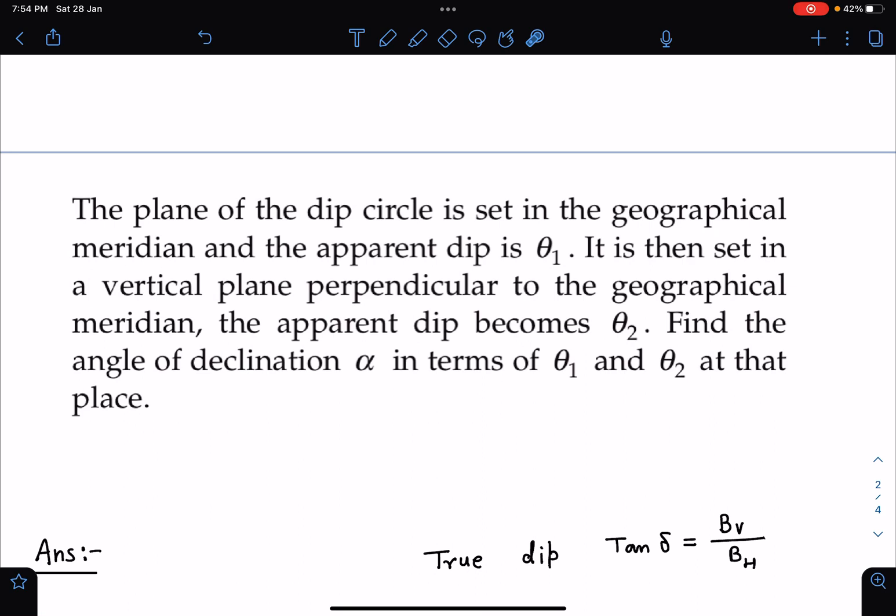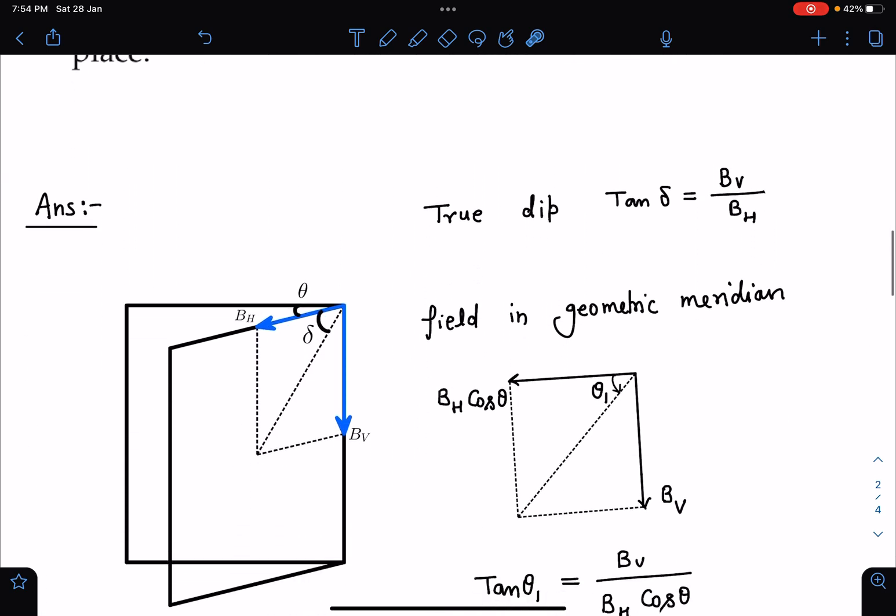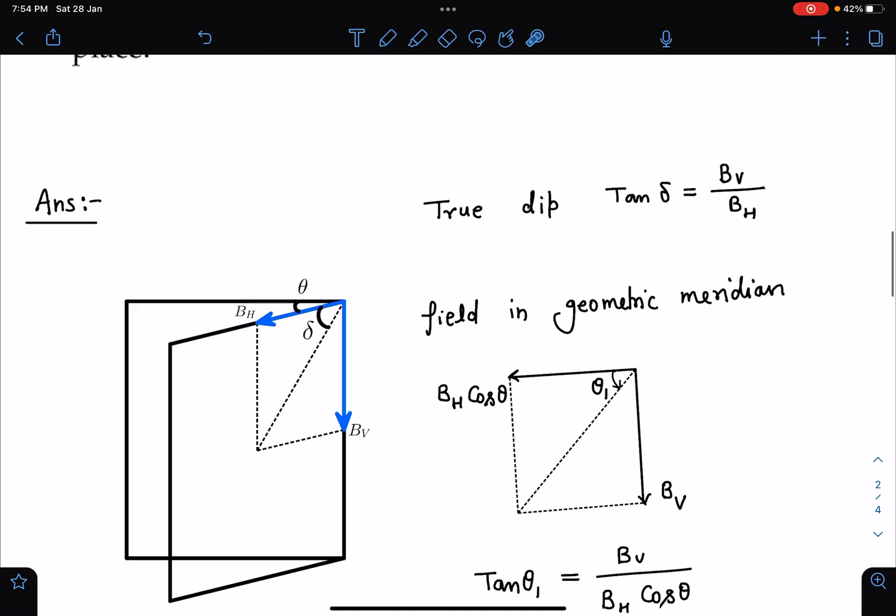The correct value of dip angle will be measured in the magnetic meridian. So here in this diagram you can see this is the magnetic meridian and this plane is geographical meridian. The correct angle of dip I can write as true dip, which is tan δ = Bᵥ/Bₕ. So this is the definition.